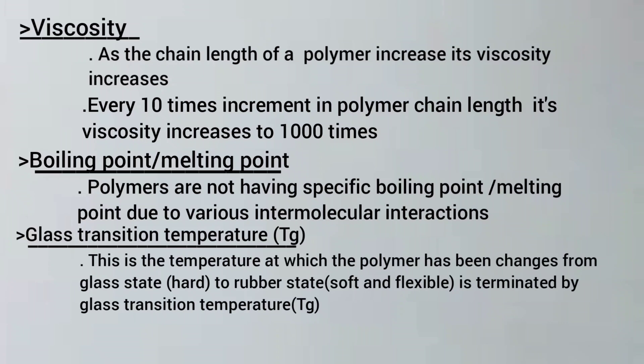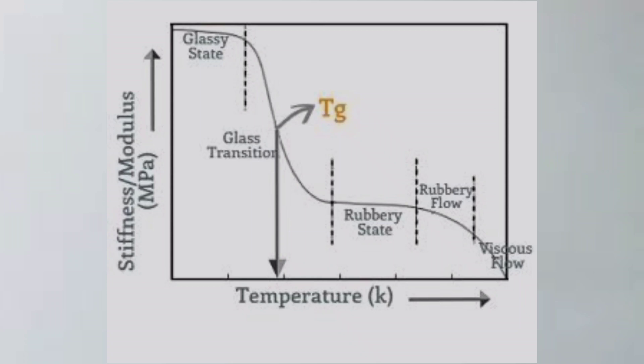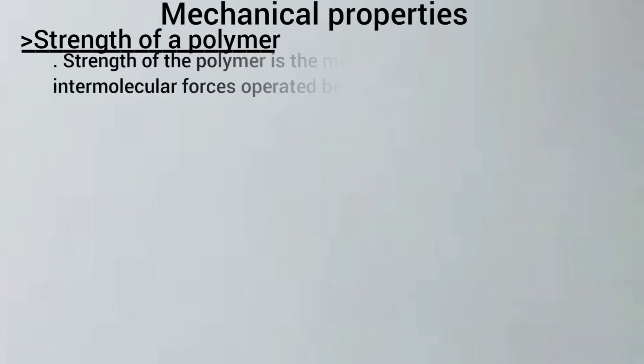Glass transition temperature is the temperature at which the polymer changes from a glassy state (hard) to a rubbery state (soft or flexible). As shown in the graph, the glass transition temperature Tg can be determined.